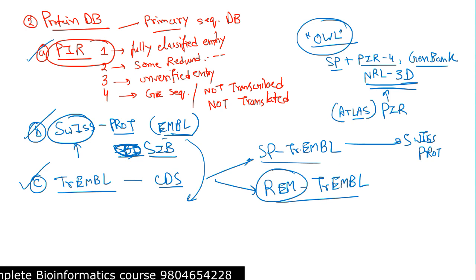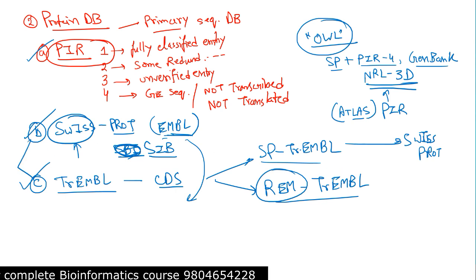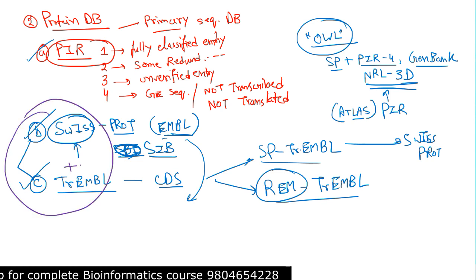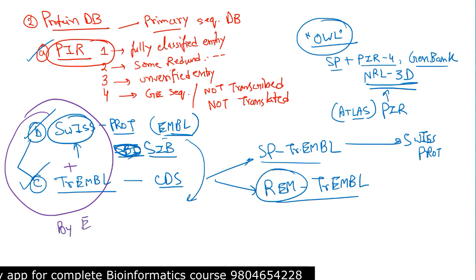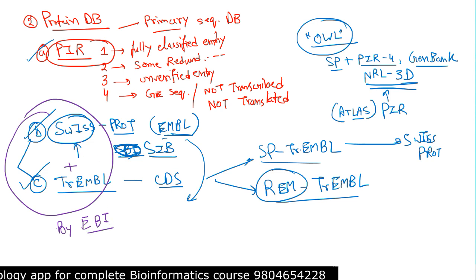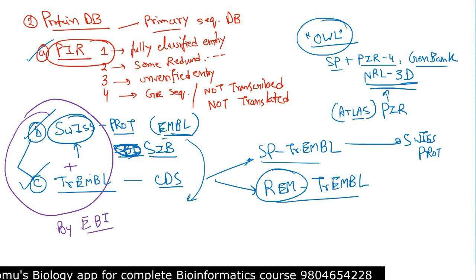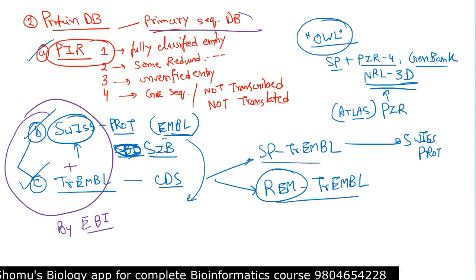There is one more type: Swiss-Prot and TrEMBL together can be maintained as a composite. These two combined are maintained by EBI. This composite of Swiss-Prot and TrEMBL has very low redundancy and much highly annotated data. This is all about the primary sequence database.